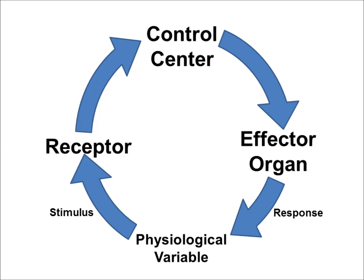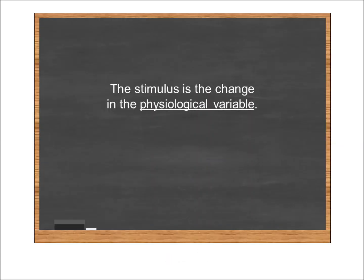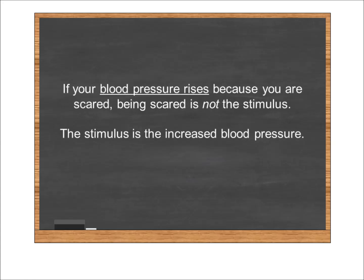I want to push this a bit farther, but I have to reiterate: the stimulus is the change in the physiological variable. It's not the reason the variable changed — it's the change itself. For example, if you get scared, your blood pressure is going to rise. But the stimulus isn't being scared — you don't have scare receptors in your body. You have what are called baroreceptors that monitor blood pressure. The stimulus is the increased blood pressure.